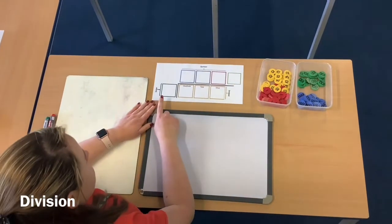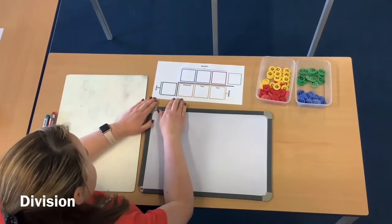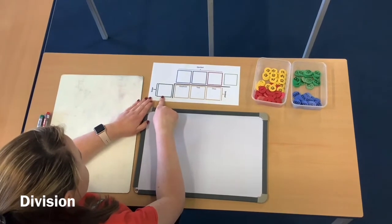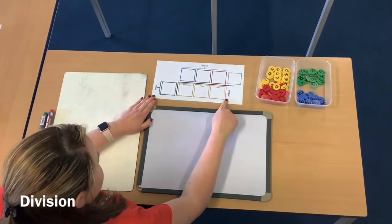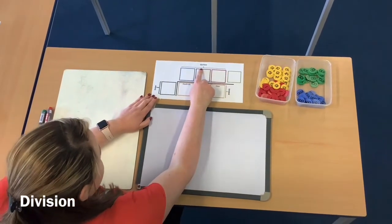Just to start us off, we're going to recap some of the vocabulary to make sure we remember. So we've got the divisor, which is the number that you are dividing by, the dividend, which is the number that you are dividing, and then your answer is the quotient.